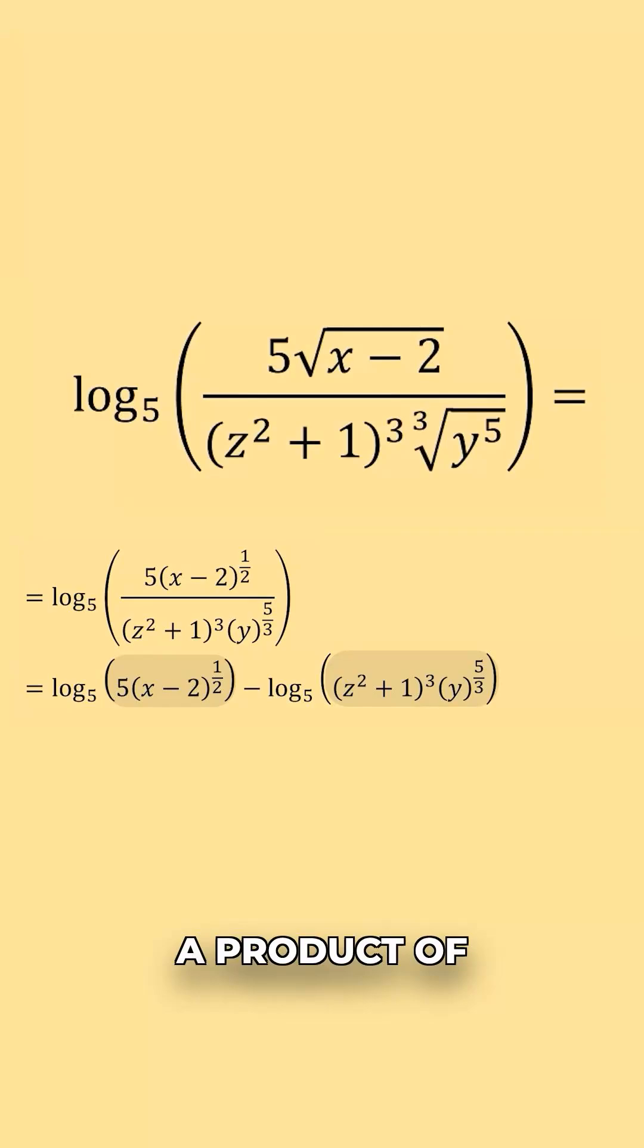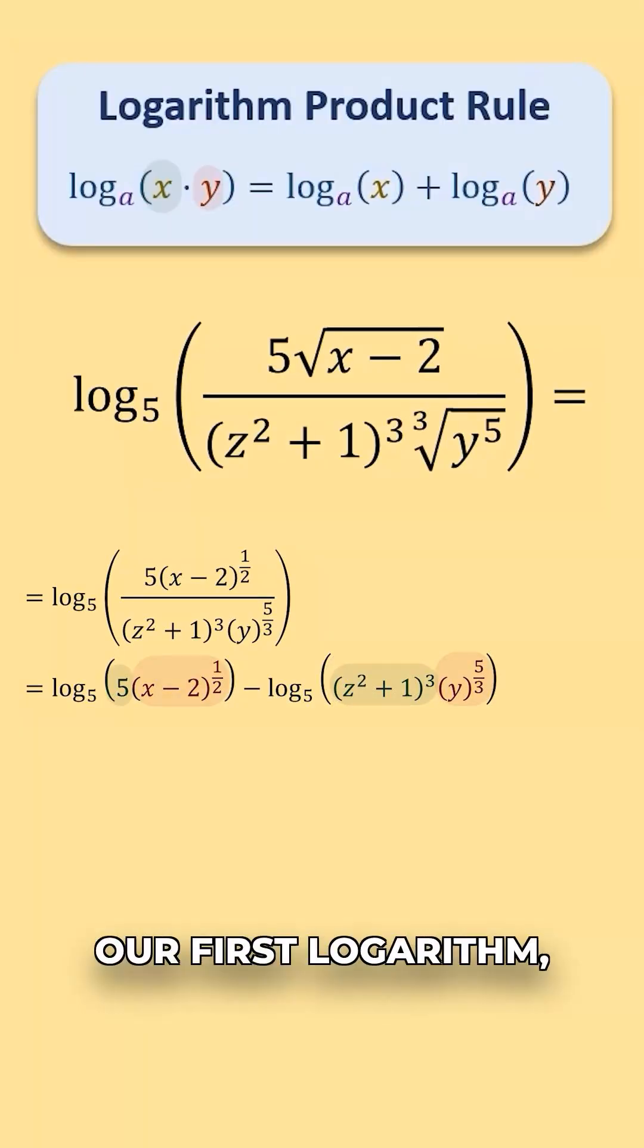Within each of these logarithms I have a product of two expressions. In our first logarithm, 5 and the quantity of x minus 2 raised to the 1 half power are the two expressions. We can rewrite this as log base 5 of 5 plus log base 5 of the quantity x minus 2 all raised to the 1 half power.